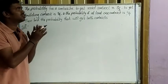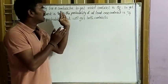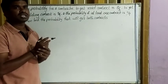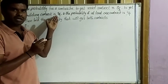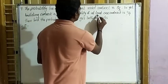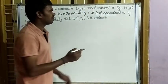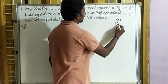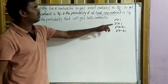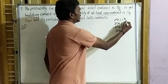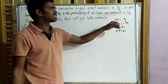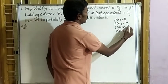First we have to understand the question. The probability of road contract is 2/3. Let this be P(A) = 2/3. The probability of building contract is 5/9. Let this be P(B) = 5/9. At least one contract means either A or B, so P(A∪B) = 4/9.